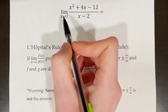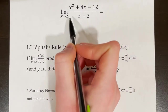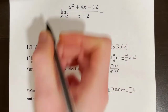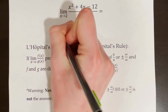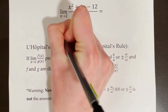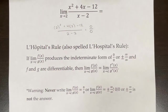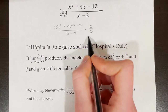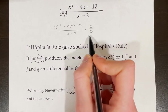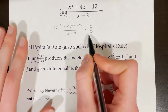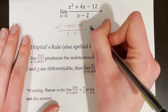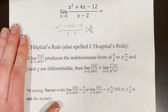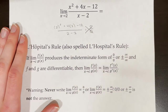When we see a limit problem like this, our go-to method is direct substitution. So we would plug in 2, but unfortunately, using this method produces 0 over 0, which is known as indeterminate form. We never say that something is equal to 0 over 0 — that is not mathematically correct.